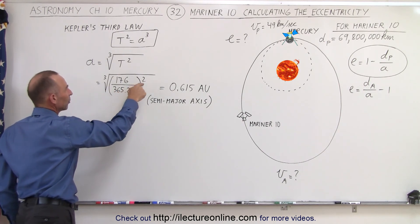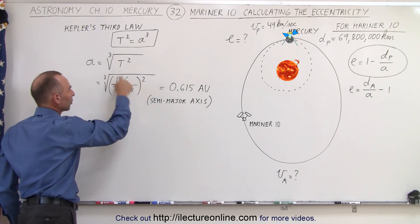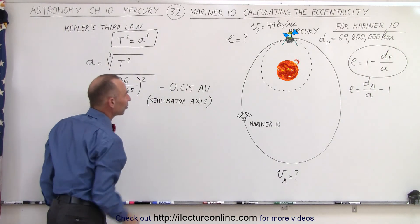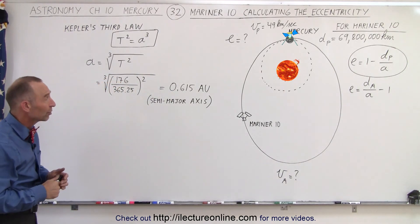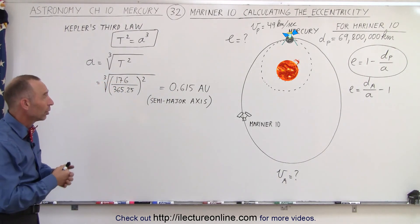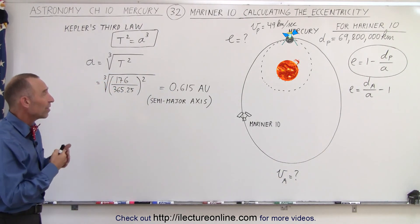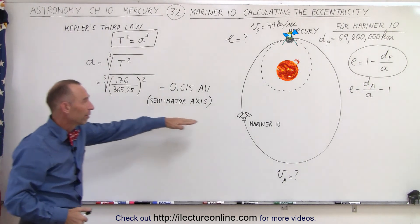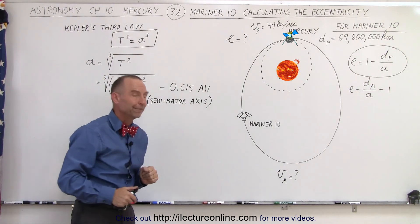We square that number, take the cube root, and we end up with 0.615 astronomical units, which is the semi-major axis for the orbit of Mariner 10.